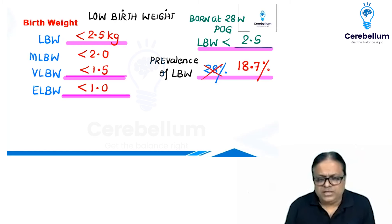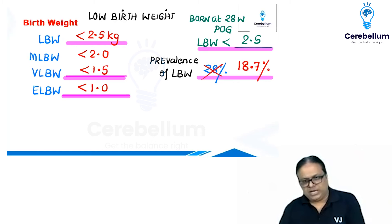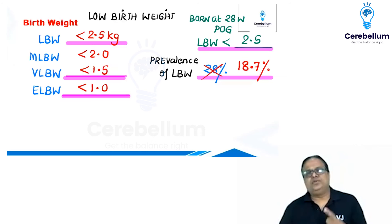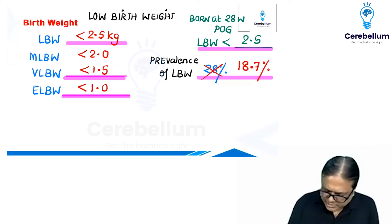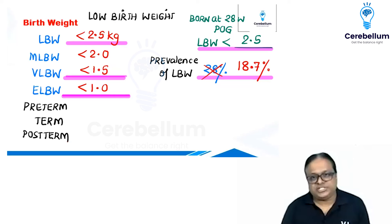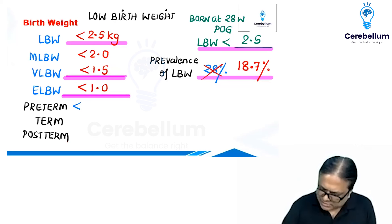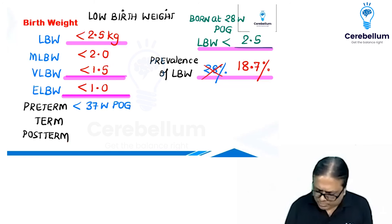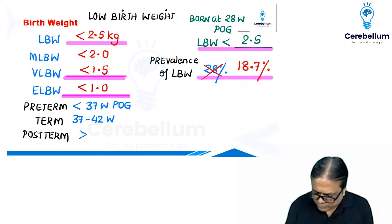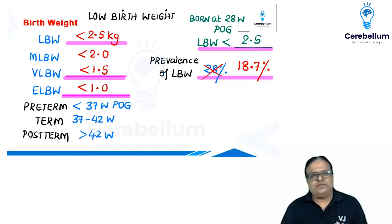Another technical question requires integrating low birth weight with pediatric concepts. What is preterm delivery, term delivery, and post-term delivery in terms of period of gestation? Preterm is less than 37 weeks. Term delivery is 37 to 42 weeks period of gestation. Post-term is more than 42 weeks. This definition is followed throughout India — PHC, CHC, medical colleges, private hospitals — everywhere.